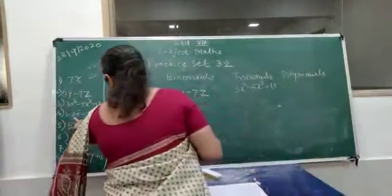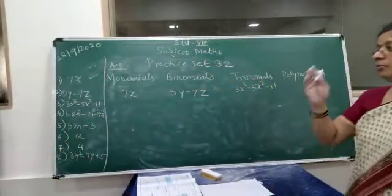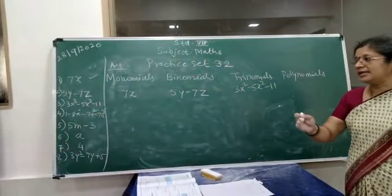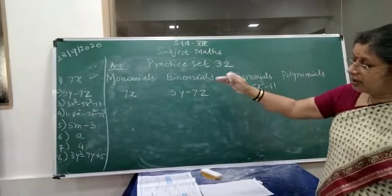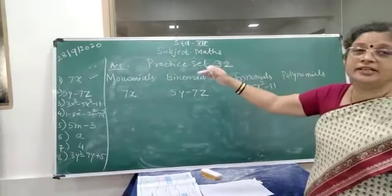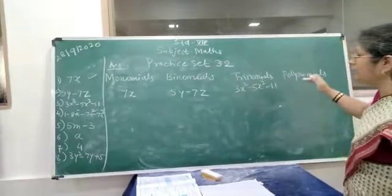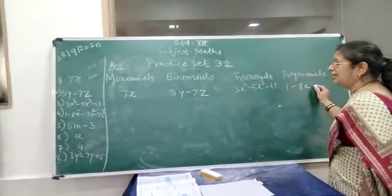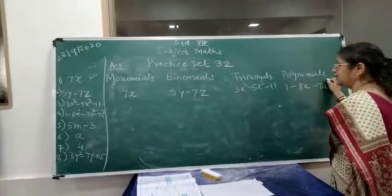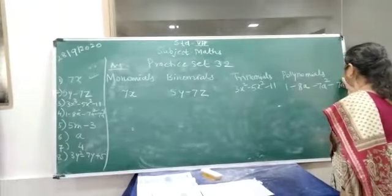Now if you see fourth one, 1 minus 8a minus 7a square minus 7a cube. Now if you see here, here more than 3 terms are there. So this is an example of a polynomial. 1, 2, 3, minus 8a minus 7a square minus 7a cube.